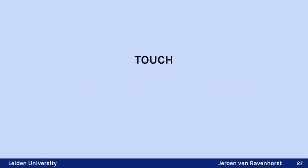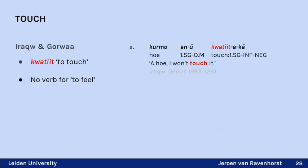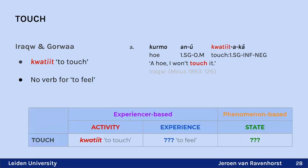For touch, there is one activity verb but no verb for 'to feel.' The activity verb expresses the physical act of touching. Strikingly, nothing in the corpus corresponds to sentences like 'it feels good,' 'I feel something on my skin,' or 'I feel the wind' — so only an activity verb is attested for the domain of touch.